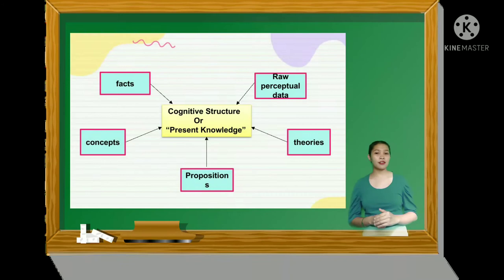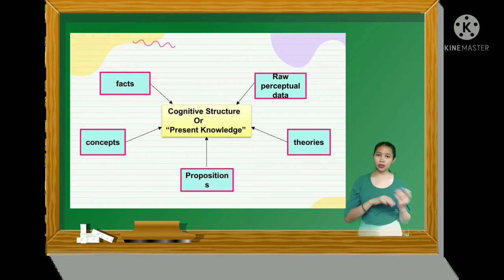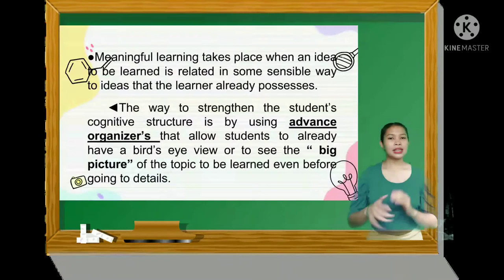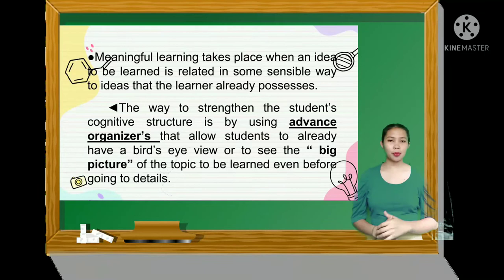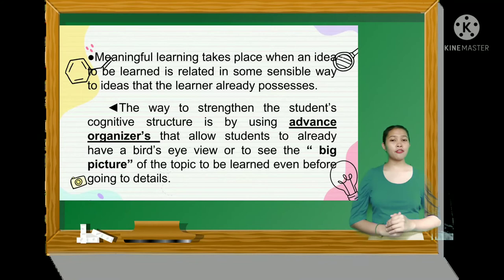This present knowledge consists of facts, concepts, propositions, theories, and raw perceptual data that the learner has available at any point in time — this comprises his or her cognitive structure. Meaningful learning takes place when an idea to be learned is related in some sensible way to ideas that the learner already possesses.